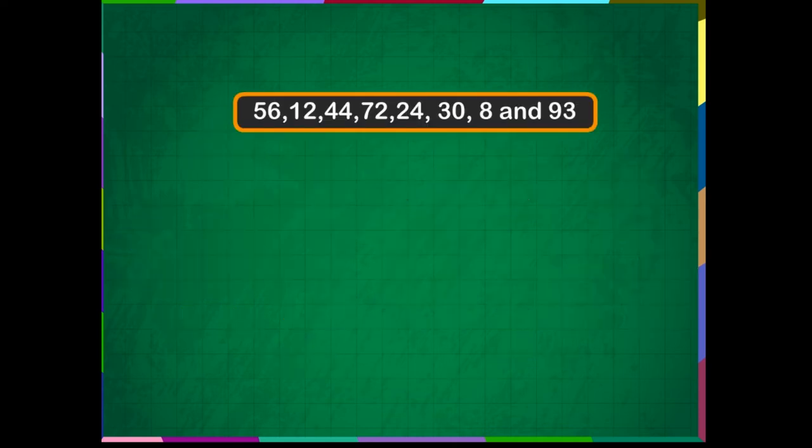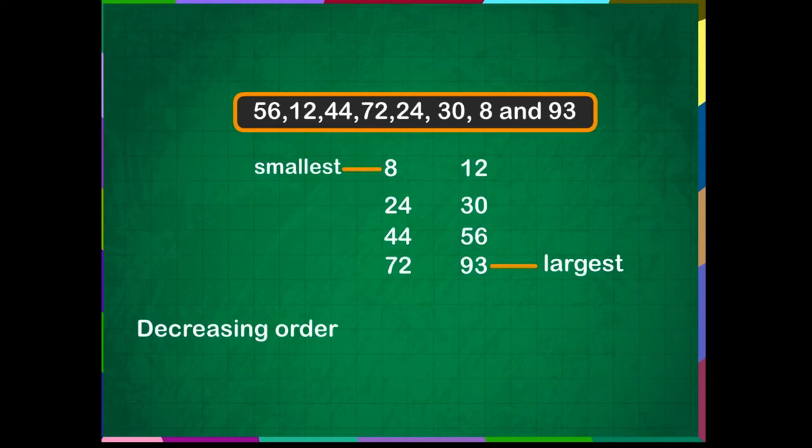Let us arrange these numbers in decreasing order: 56, 12, 44, 72, 24, 30, 8, and 93. We know that in the given numbers, 93 is the largest.